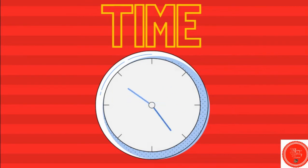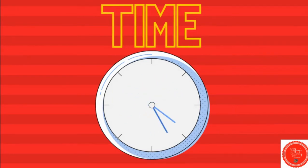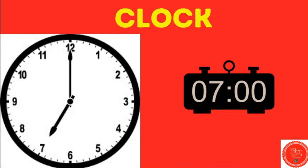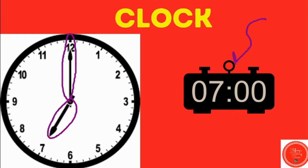Time. Because we're talking about the number seven, our clock today says seven o'clock. The short hand is the hour hand. It's pointing to the seven, and this long hand is the minute hand. It's pointing to the twelve — that's seven o'clock. This is what it looks like on a digital clock.